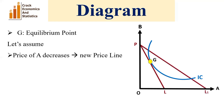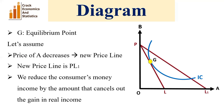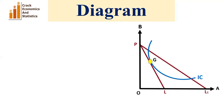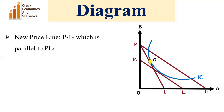If the price of A decreases, we get a new price line. We then reduce the consumer's money income by the amount that cancels out the gain in real income, so we get a new price line which is parallel to PL1 — that is P2L2. Now P2L2 is tangent to IC at point H, so H is the new equilibrium point.